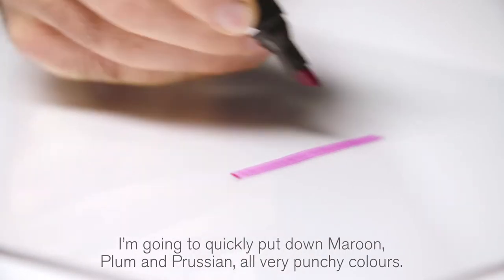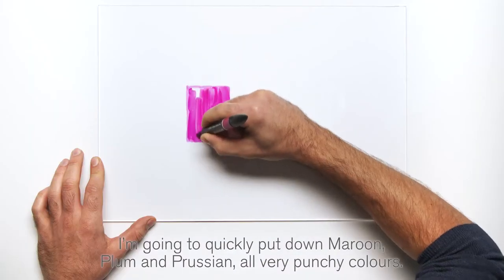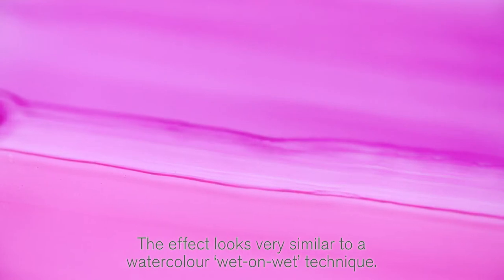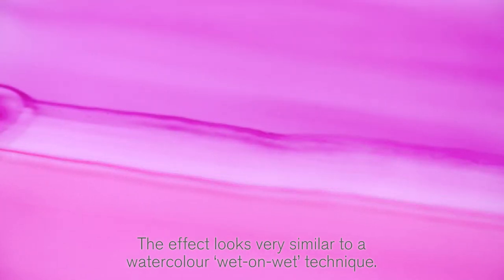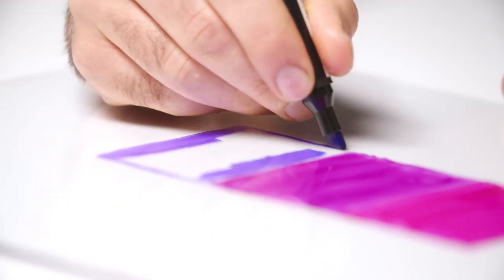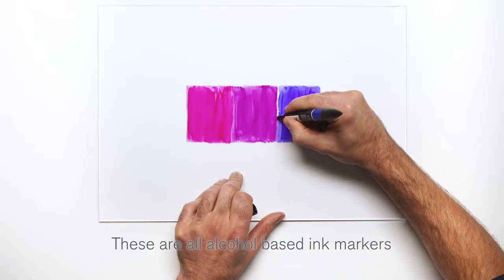I'm going to quickly put down maroon, plum, and prussian, all very punchy colors. The effect looks very similar to a watercolor wet-on-wet technique. These are all alcohol-based ink markers.